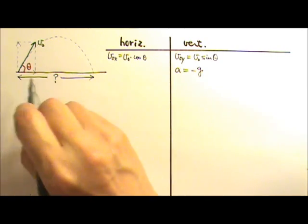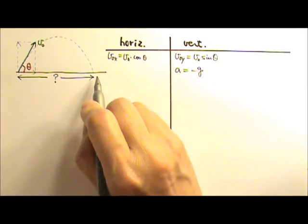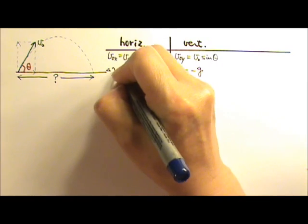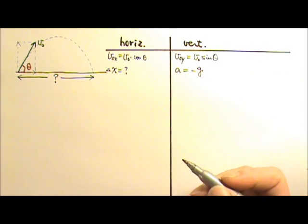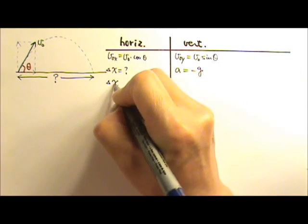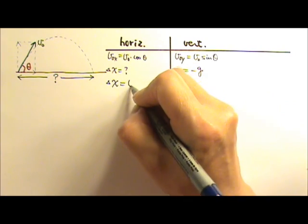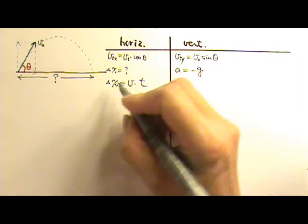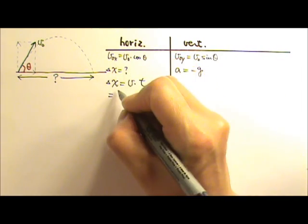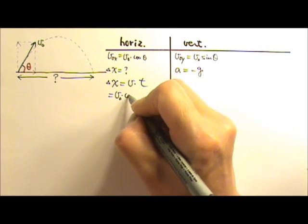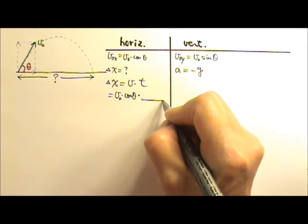Now, we want the displacement in the horizontal direction. So we want the delta X. The only equation we need for the horizontal side is delta X equals V times T. We already know the velocity, that is V₀ times cosine theta. But we will need the time.